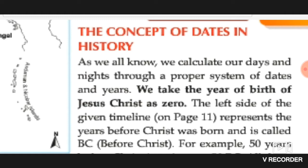Anno Domini means the year of the Lord. We take the year of birth of Jesus Christ as zero, and the period before the birth of Jesus is termed as B.C. — Before Christ. That is, before Jesus' birth is the period BC, meaning Before Christ.